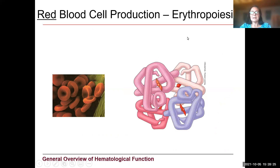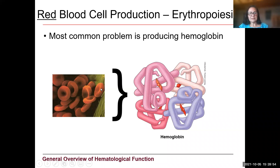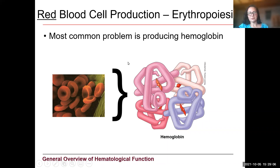To make red blood cells, one of the things we have to make a lot of is the protein called hemoglobin. Hemoglobin has four large amino acid chains as part of it. The most common problem in making red blood cells is being able to produce this molecule. Red blood cells are fantastic, big, beautiful sacks of hemoglobin — just chock full of these proteins. And if you can't make these proteins, you're going to have trouble making red blood cells.